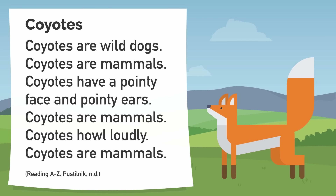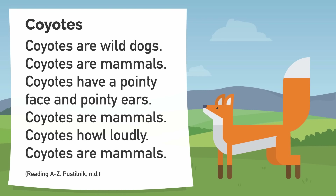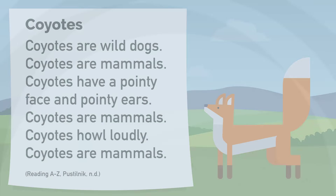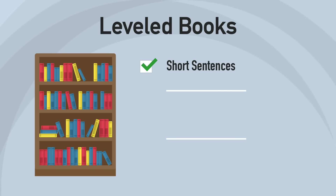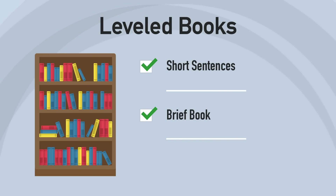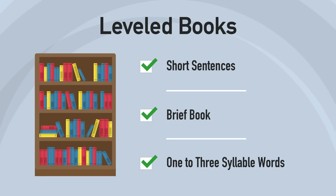Here is an example of a first-grade leveled book. The text reads: 'Coyotes are wild dogs. Coyotes are mammals. Coyotes have a pointy face and pointy ears. Coyotes howl loudly.' Are the sentences short? Yes. Is the book brief? Yes. Does the passage contain only one to three-syllable words? Yes.